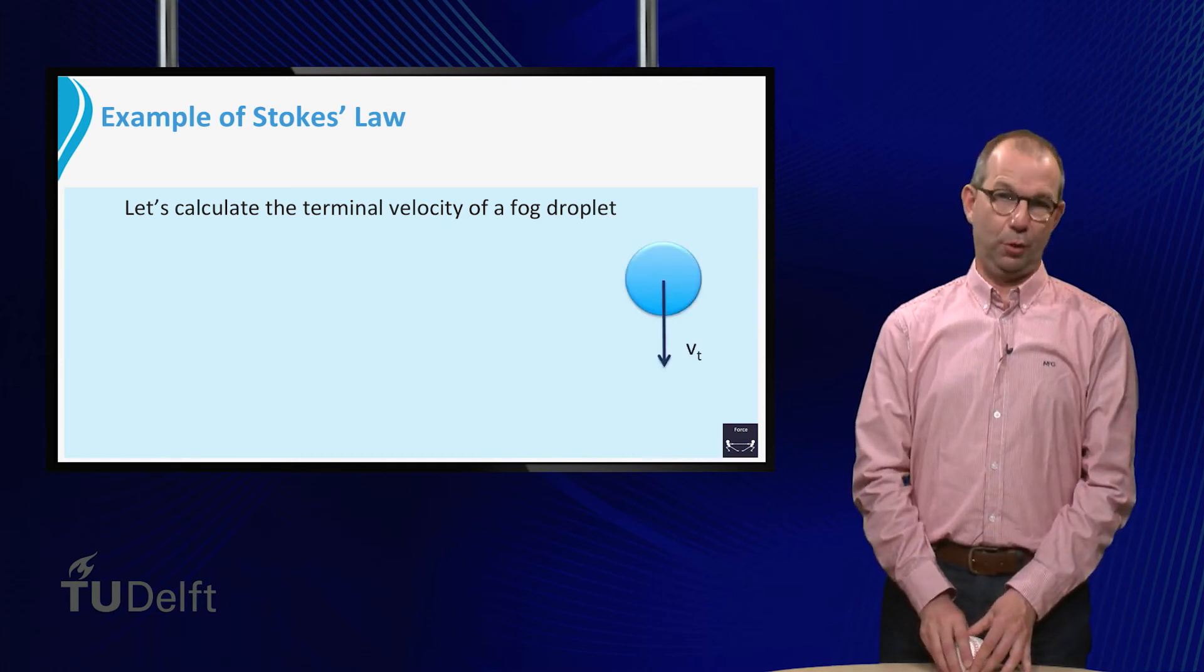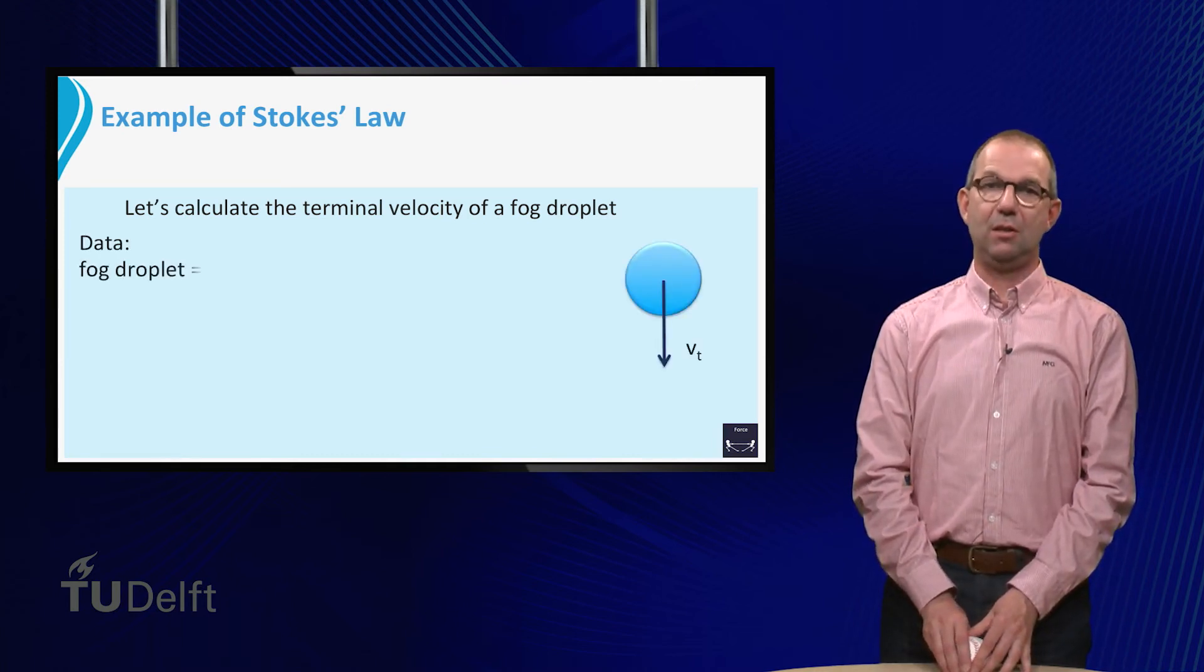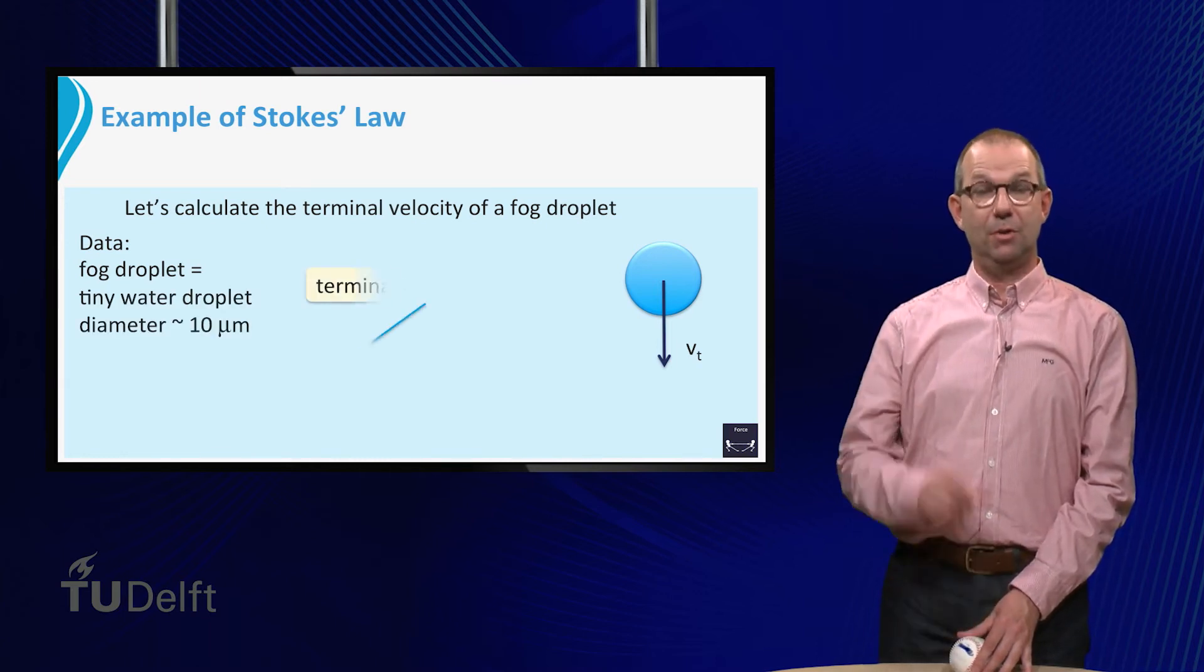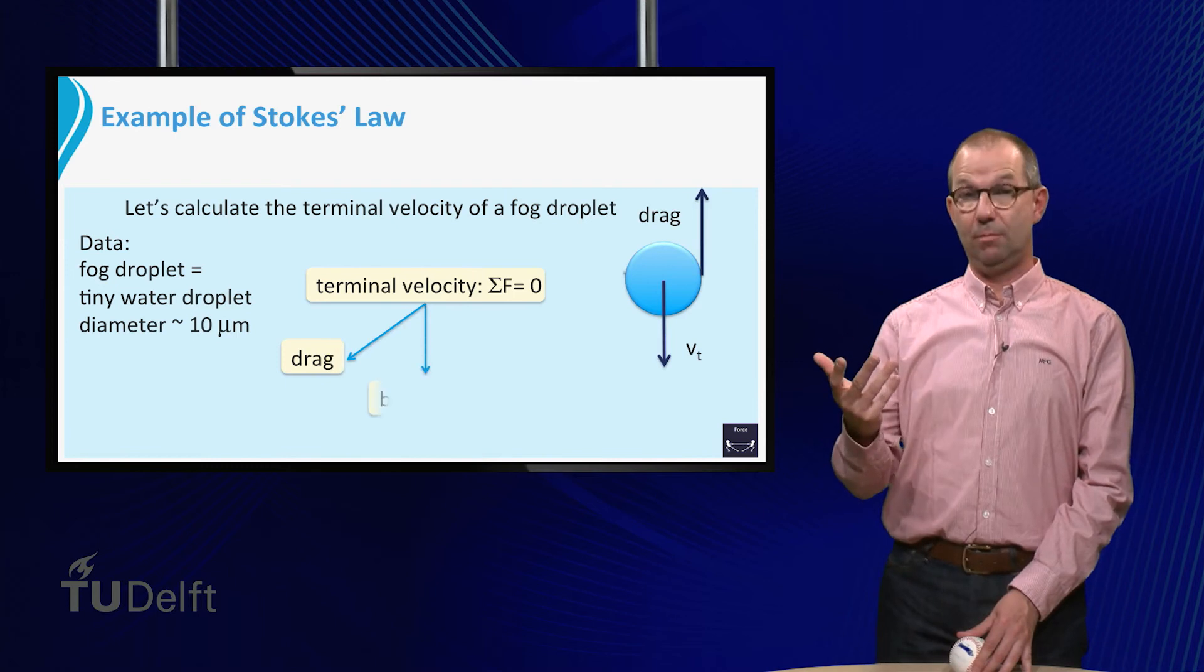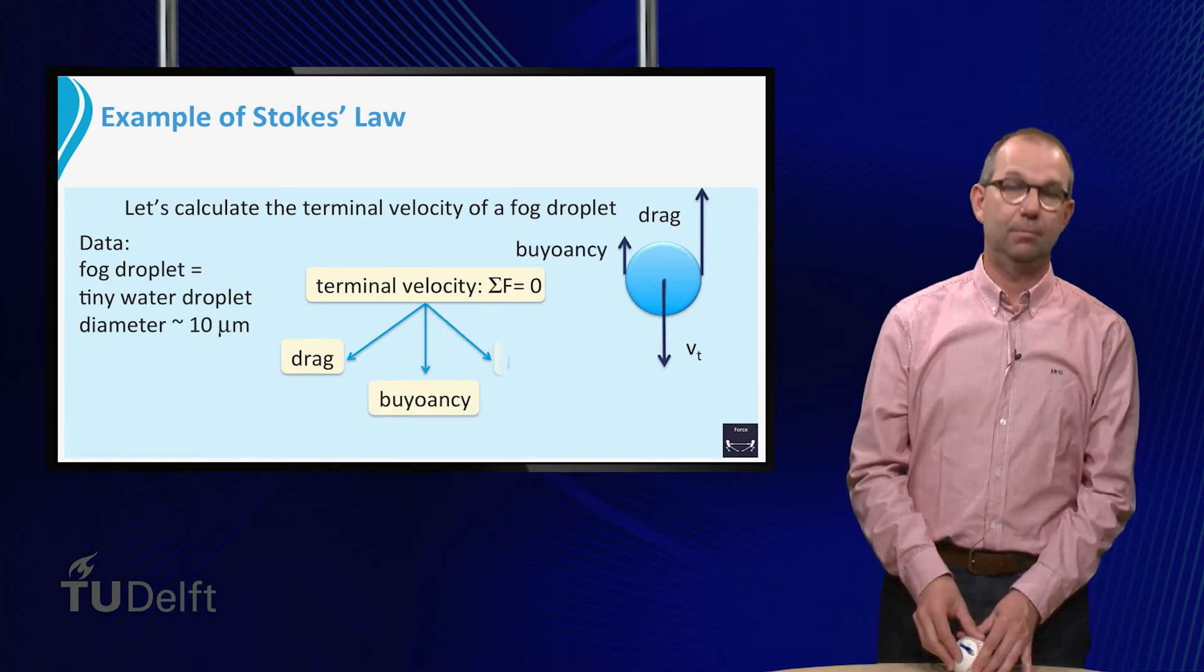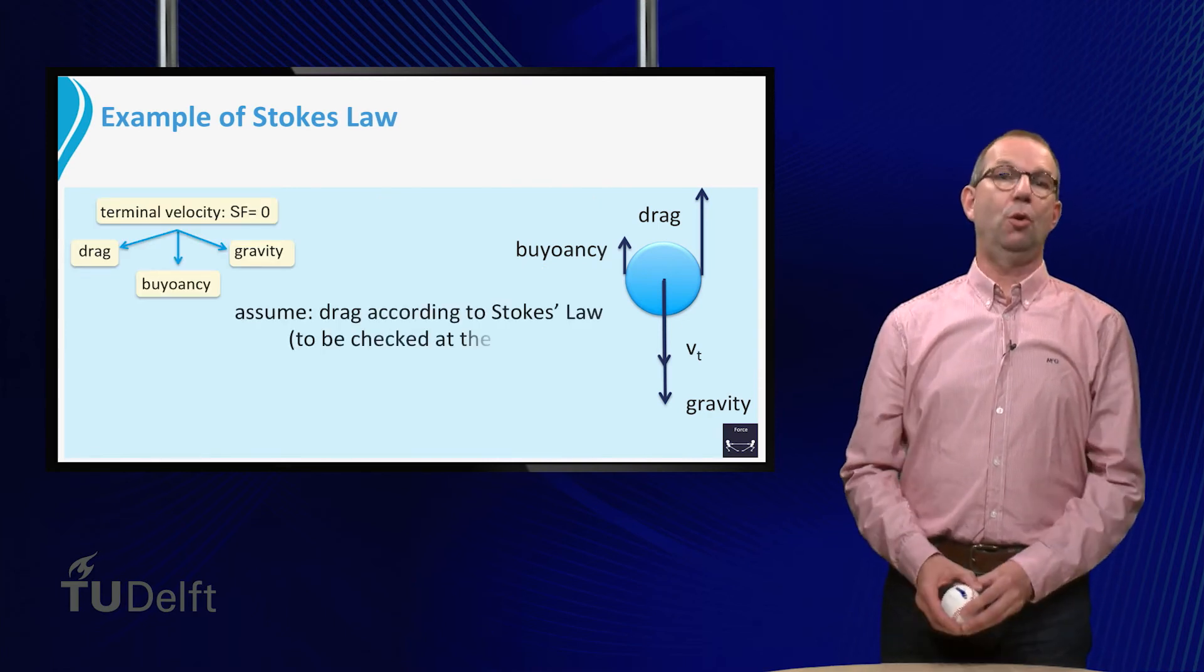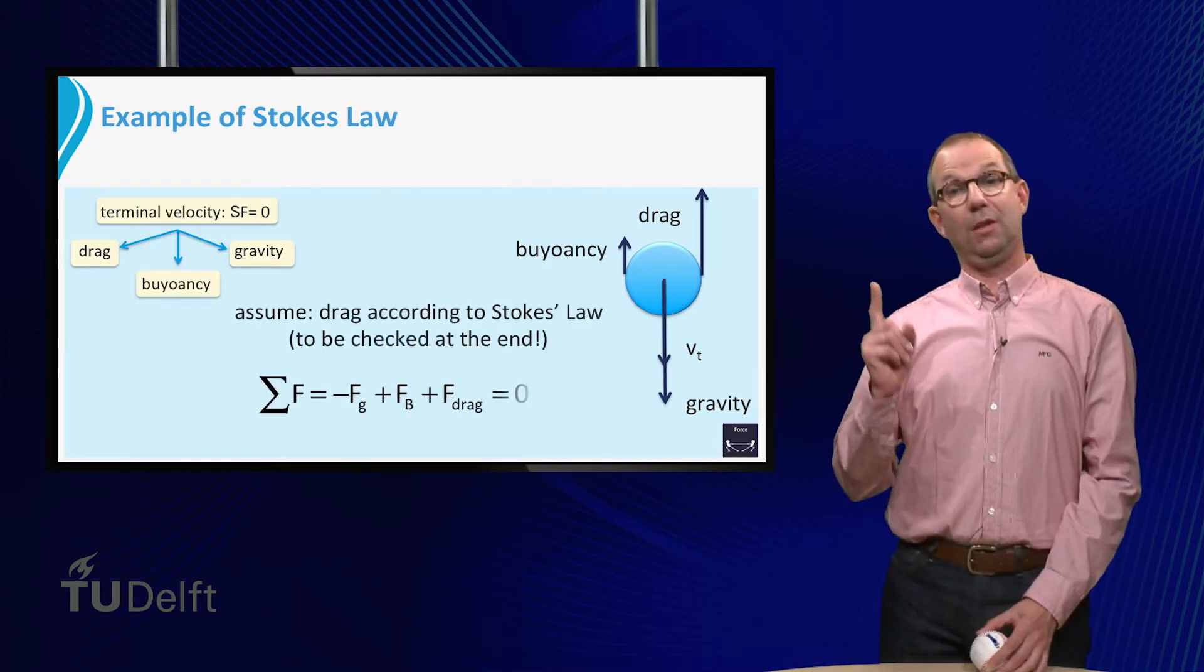Calculating the terminal velocity means that we set the sum of forces equal to zero. These are drag, buoyancy, and gravity. We assume that the drag is given by Stokes law, to be checked at the end of course.